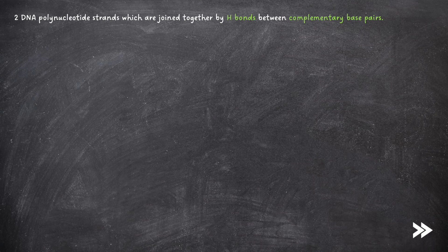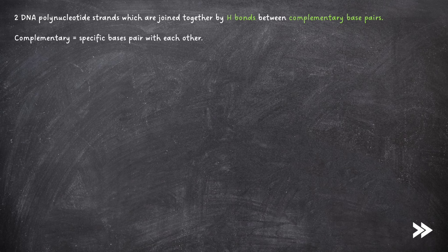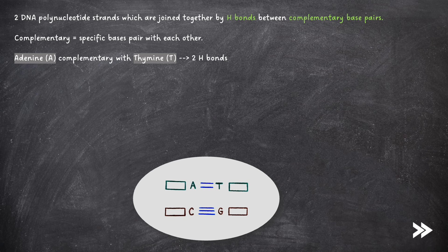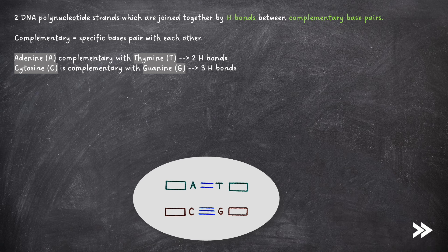So let's have a look at the structure of DNA. DNA consists of two DNA polynucleotide strands, which are joined together by hydrogen bonds between complementary base pairs. Complementary meaning that specific bases pair with each other. The base adenine is complementary with thymine, and two hydrogen bonds form between these bases. Cytosine is complementary with guanine, and three hydrogen bonds form between these bases.